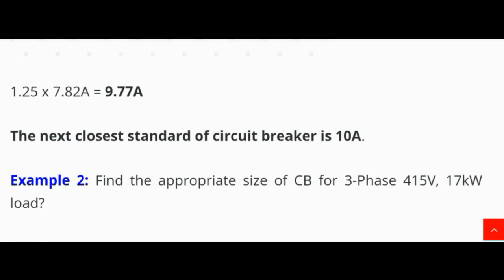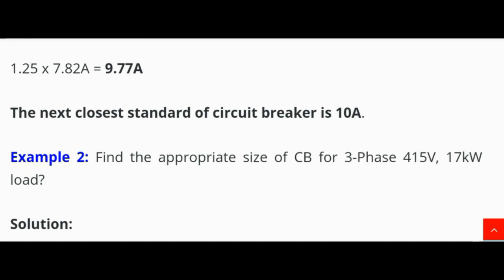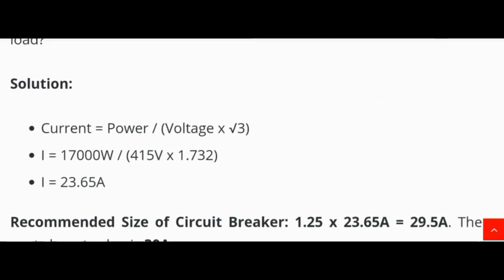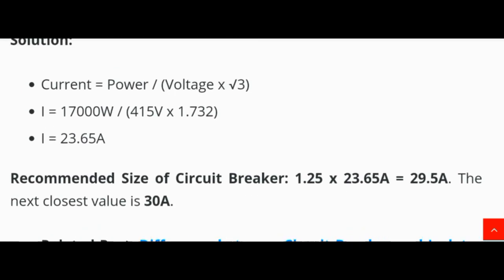Example 2: Find the appropriate size of circuit breaker for a three phase, 415 volt, 17 kW load. Solution: I = P / (V × √3) = 17,000 W / (415 V × 1.732) = 23.65 ampere. Recommended breaker size: 1.25 × 23.65 A = 29.5 ampere. The next closest standard value is 30 ampere, so we will use a 30 ampere circuit breaker.